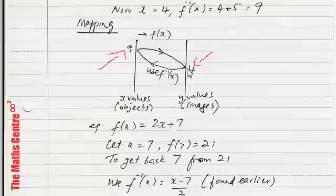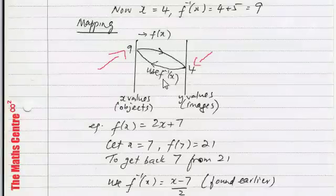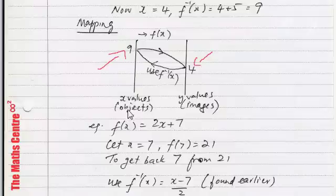So, along here, we have the x values. Along here, we have the y values. I've given you the names earlier. x values are referred to as objects. And y values are referred to as images.